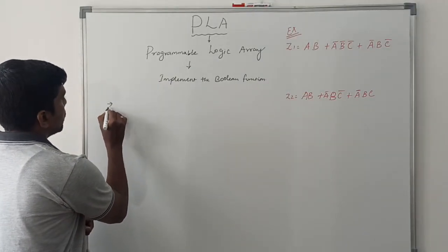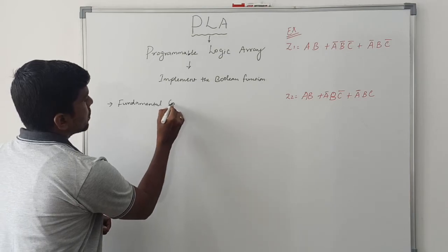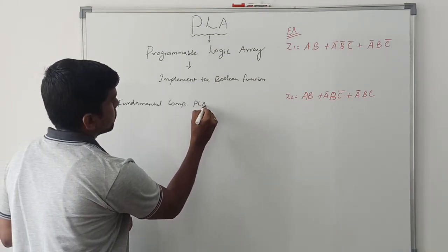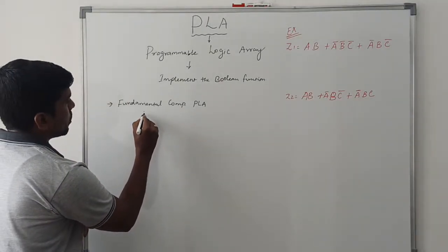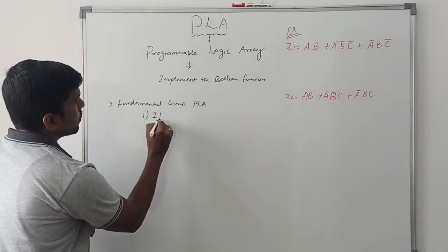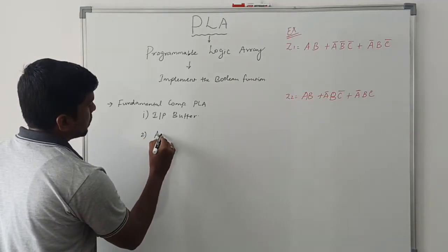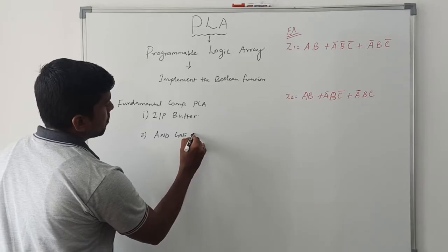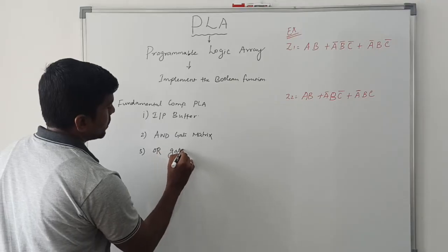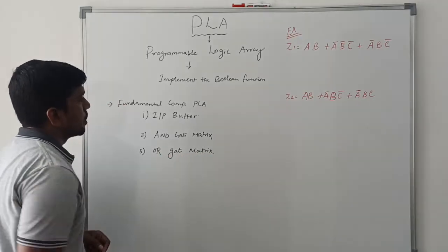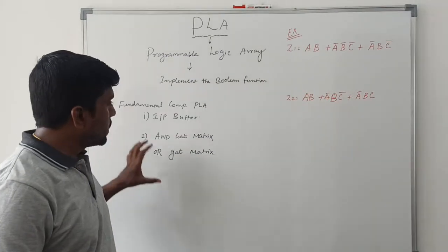Now let's look at the fundamental components of PLA. The three components needed to execute PLA are: first, the input buffer; second, the AND gate matrix; and third, the OR gate matrix. We will discuss each one by one.